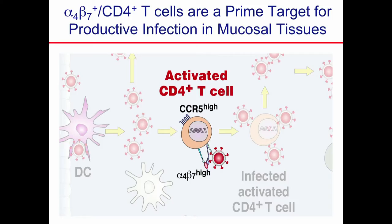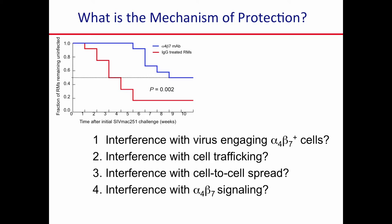But how does this antibody work? There are four possibilities: perhaps the antibody is interfering with the interaction between the virus and the cell; perhaps it's interfering with cell trafficking; maybe it's interfering with cell-to-cell spread; and the mechanism I favor is that it's interfering with signaling. I won't talk about these too much today, but I will tell you that we don't really know the answer — but we want to know.